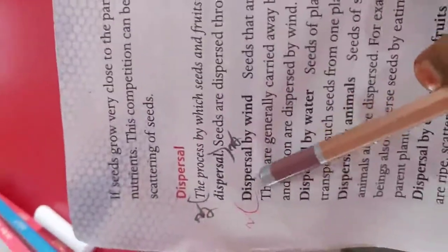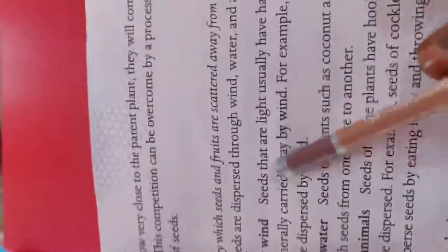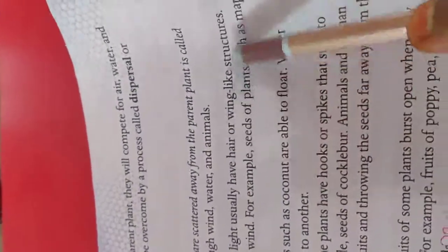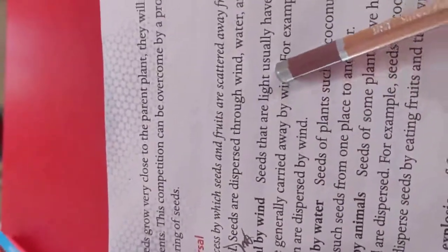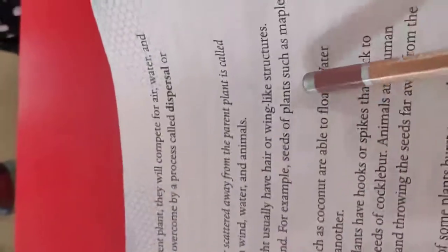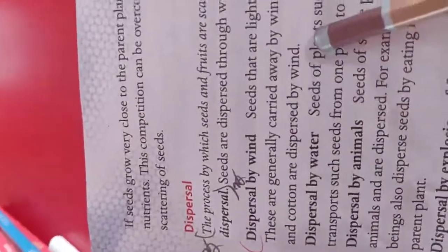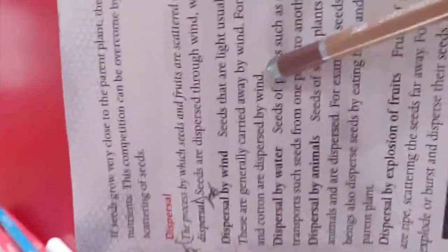Dispersal by wind. Seeds that are light usually have hair or wing-like structures. These are generally carried away by the wind. For example, seeds of plants such as Maple and cotton are dispersed by wind.